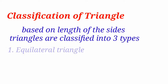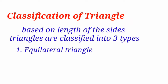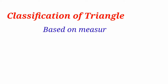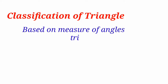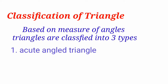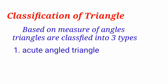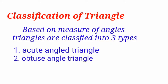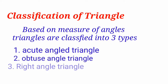The first type is the equilateral triangle, the second is the isosceles triangle, and the third is the scalene triangle. Based on the measure of angles, triangles are also classified into three types: first, acute angle triangle; second, obtuse angle triangle; and third, right angle triangle.